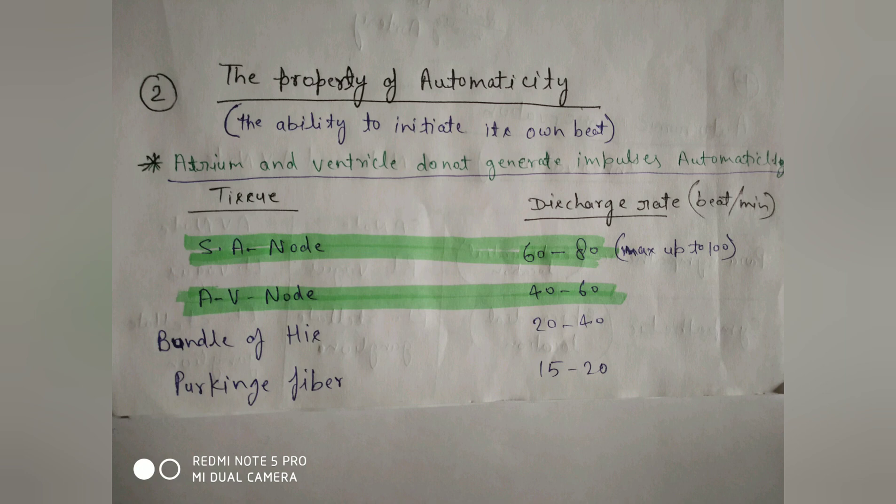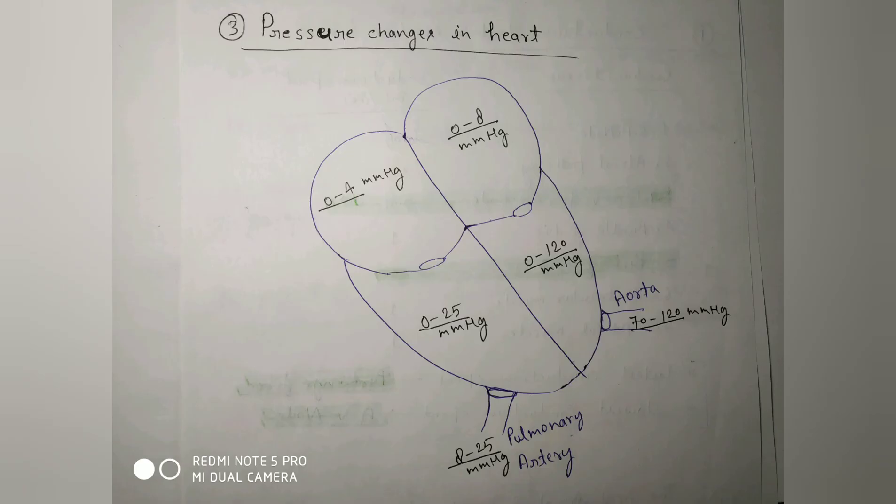The fastest automaticity is the SA node at 60 to 80 beats per minute, and the AV node has 40 to 60 beats per minute. This is very important — the SA node automaticity rate has been asked many times in the CROC exam.